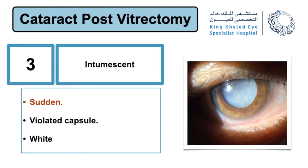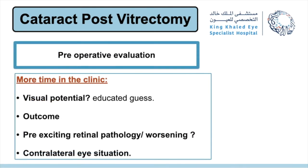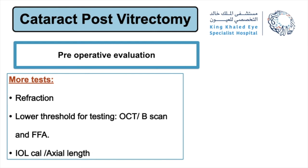The third type is intumescent white cataract — a sudden, rapid drop of vision related to a violated capsule, presenting as white cataract. Pre-operative evaluation should be thorough, requiring more time in the clinic. Visual potential in these cases is sometimes an educated guess, and outcomes should be discussed in detail with patients as they differ from conventional cataract patients. Pre-existing retinal pathology may worsen and may need intervention. The contralateral eye should be examined and the situation documented. These patients require more testing: refraction, tonometry, lower threshold for B-scan, OCT, FFA, and IOL calculation with axial length measurement to aid management planning.